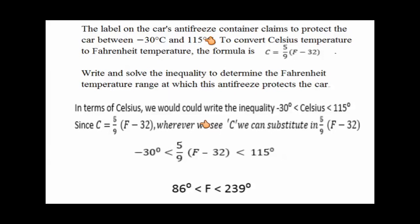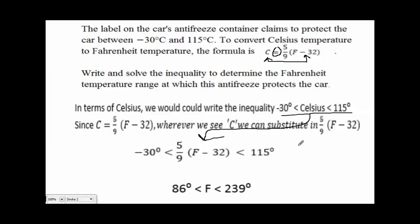We know that C is the same as five-ninths times (F minus 32). Because these two are equal to each other, they're interchangeable. So I took this inequality and wherever I saw Celsius, I plugged in the formula for Celsius. So the inequality can be written using the formula, or it can just be written using Celsius terminology directly — both represent the same thing.